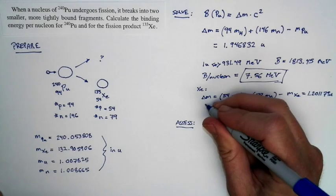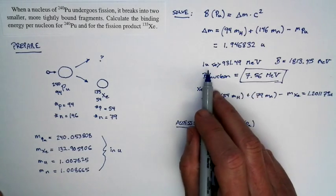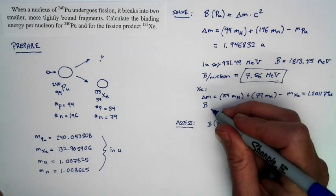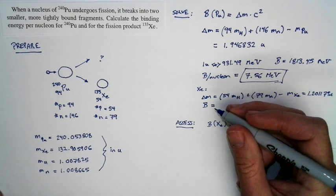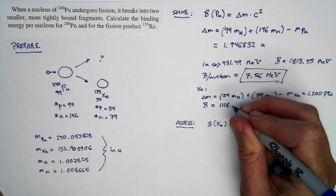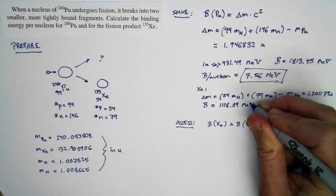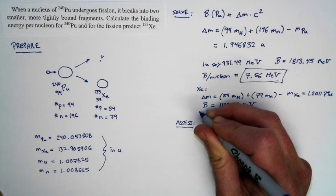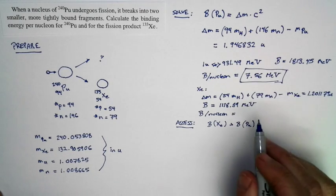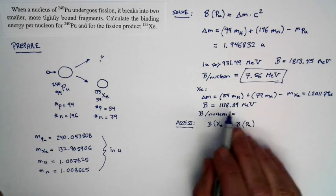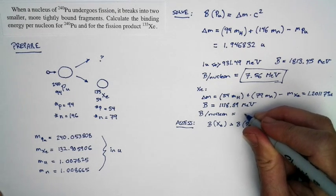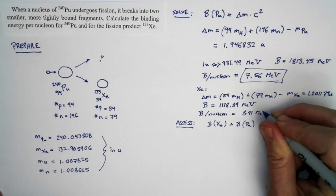Now, we can convert that into an energy because there's one atomic mass unit corresponds to 931.49 MegaElectron Volts. And so we can figure out the binding energy is 1,118.89 MegaElectron Volts. But again, what we're asked to compute is not the binding energy, but the binding energy per nucleon. And the binding energy per nucleon is just equal to this number divided by the number of nucleons, which is 133. And so what we get is 8.41 MegaElectron Volts.